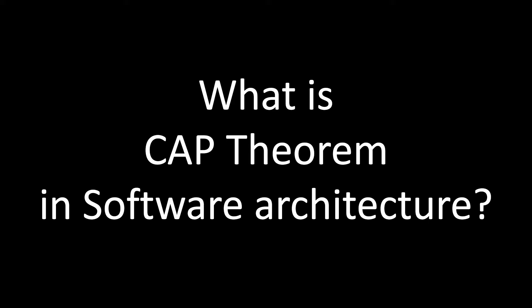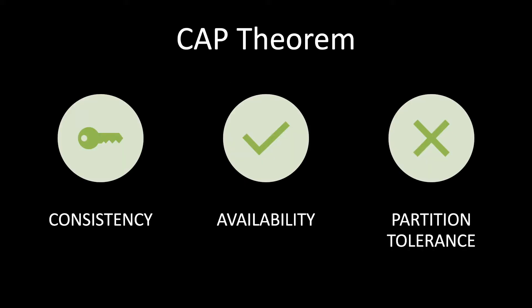CAP theorem is an acronym for three words: C stands for Consistency, A stands for Availability, and P stands for Partition Tolerance. This theorem was proposed by computer scientist Eric Brewer. As per him, it is impossible for a data store to provide more than two guarantees out of these three. At one time, you can either choose CA, CP, or AP.